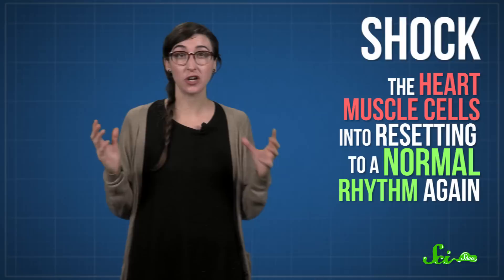Defibrillators are made of an electric supply unit and electrodes that are either pressed to a person's chest or inserted into a person's heart. And these devices can generate a high-voltage electric current to shock the heart muscle cells into resetting to a normal rhythm again.